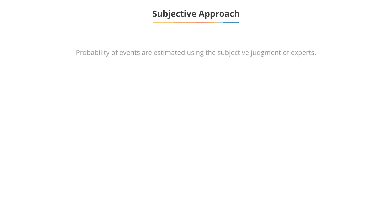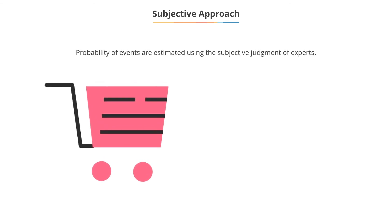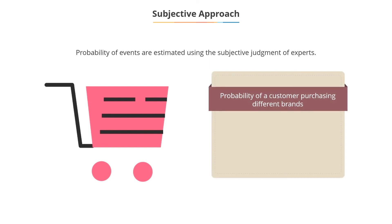Subjective approach: in this approach, besides past experiences, probabilities of events are estimated using the subjective judgment of experts. For example, the probability that a customer will purchase different brands will be based on the subjective assessment of experts based on their perceptions of the consumer or market research.